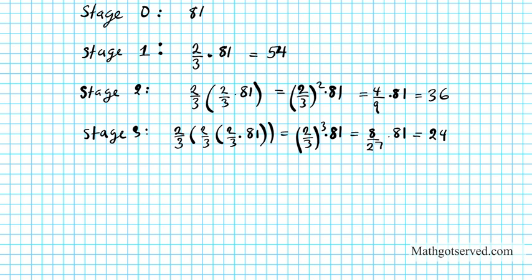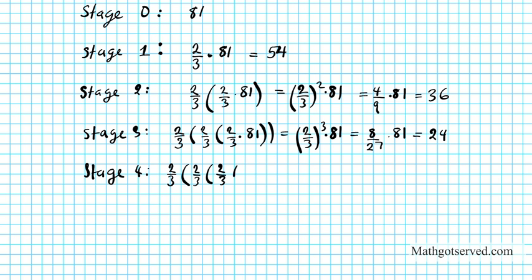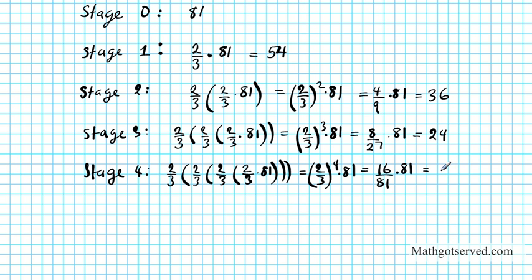Let's move on to stage 4. The lengths keep getting smaller. Two-thirds of stage 3 is two-thirds of stage 2, which is two-thirds of stage 1, which is two-thirds of stage 0. So this is (2/3)⁴ times 81, which is 16/81 times 81, and the length now shrinks to 16.